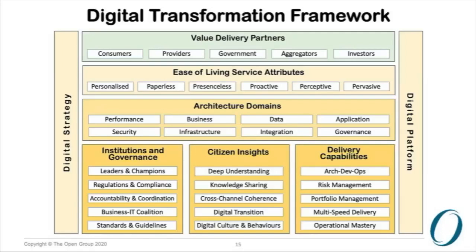The architecture layer covers six to eight domains, starting from performance-based architecture through to integration and governance — that is the architecture planning layer. The bottom three pillars cover the different implementation layers required to execute that architecture. Number one is having good institutions and governance. Number two is providing citizen insights — we need to know what citizens are asking for. Third is back-end delivery capabilities, which addresses how we combine architecture with practices — something I will cover in a couple of slides.